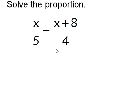So let's solve this proportion. Anytime I have a fraction equal to a fraction, I can cross multiply. When I cross multiply, I like to circle what I'm going to be multiplying together.